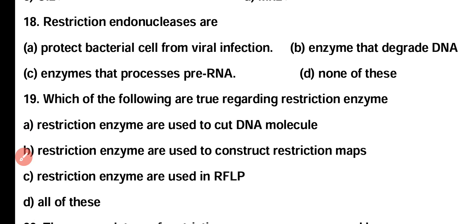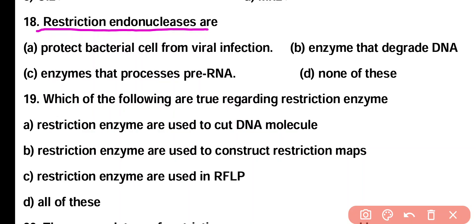Question 18. Restriction endonucleases: Option A: protect the bacterial cell from viral infection, Option B: are enzymes that degrade DNA, Option C: are enzymes that process pre-RNA, Option D: none of these. Correct answer is Option A. Restriction endonucleases are enzymes present in bacterial cells and they protect the bacterial cell from viral infection.